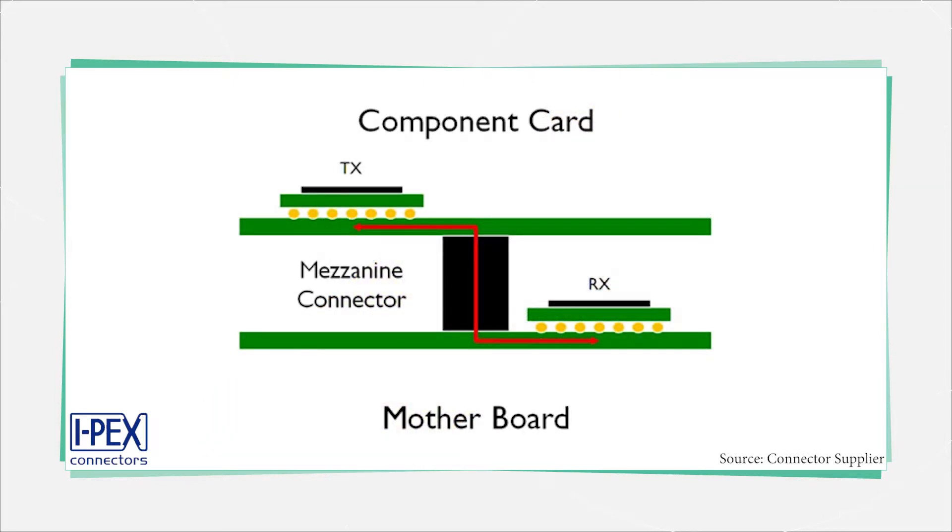There's also a special type of connector called a mezzanine connector, which gets the name from the fact that it typically connects a smaller board on top of a bigger one. A smaller board might hold an ASIC or similar circuitry and is added to provide an optional feature.